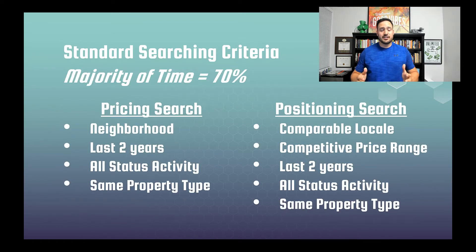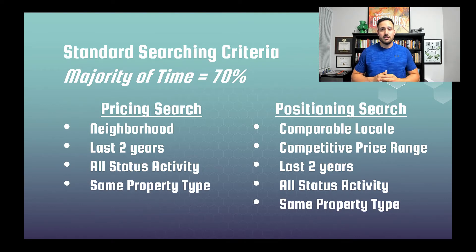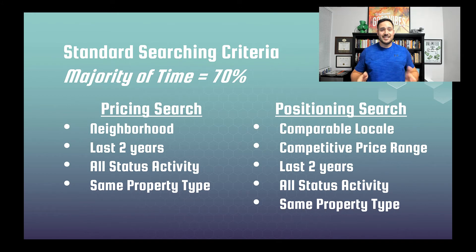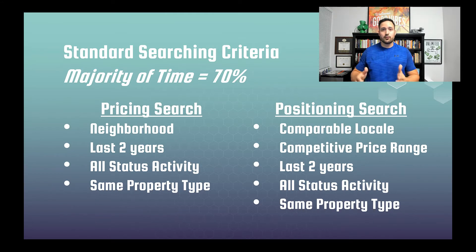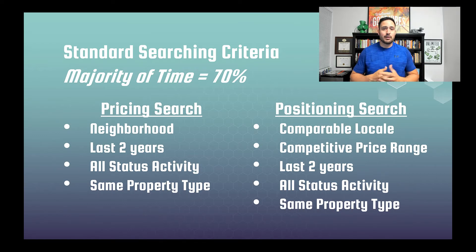The standard search criteria will be the majority of your pricing. This is when homes fall into a specific, well-defined neighborhood. When you're doing your pricing search, you're going to search by that neighborhood for the last two years, all status activity, and for the same property type. Single family homes will only be searched for if you're pricing a single family home. If you're pricing a multi-family, condo, or townhome, you're going to search for that property type as well. That will be your base search that you're going to load into the program.